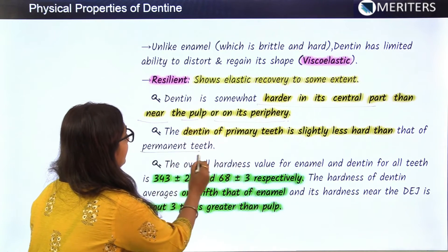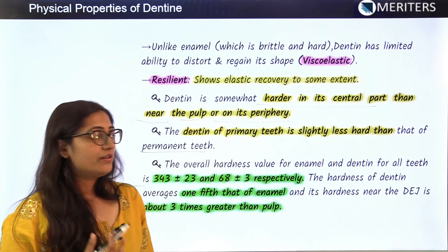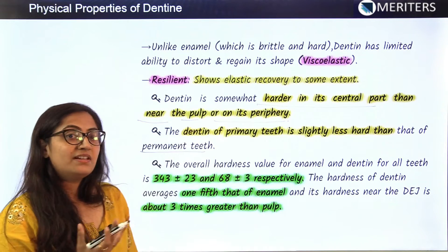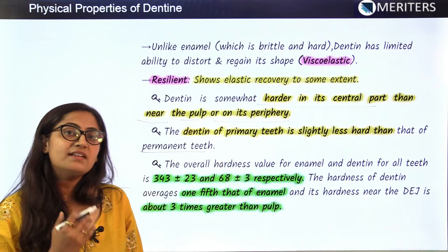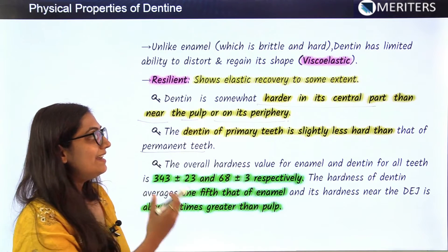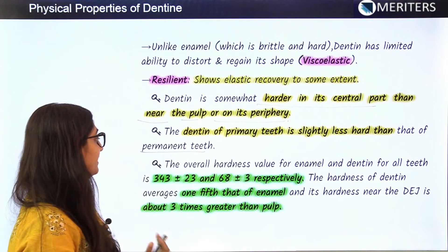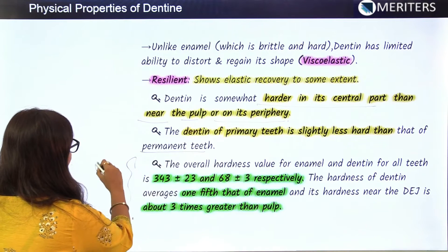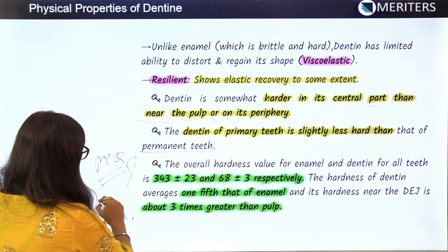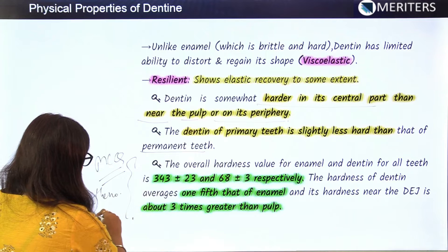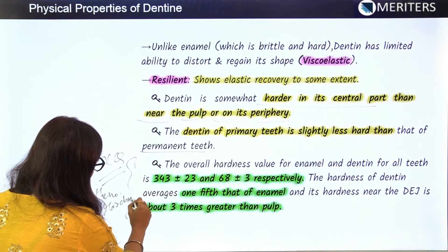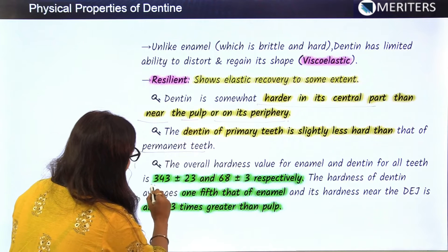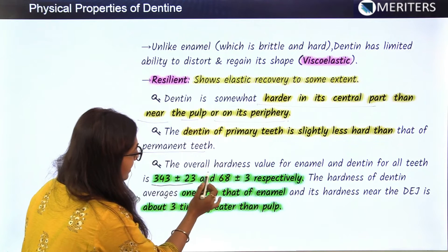Hardness increases with mineral content. During the primary stage, mineral contents are less, so the dentine of primary teeth is slightly less hard than that of permanent teeth. The overall hardness value is an important MCQ fact: for enamel it is 343 ± 23, and for dentine it is 68 ± 3.